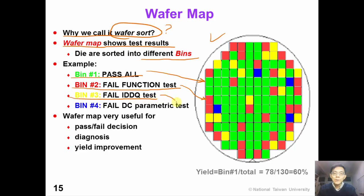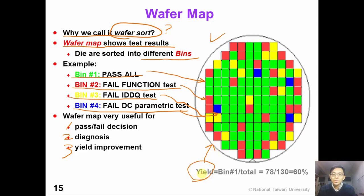The yellow color represents a die that passed the functional test but failed the IDDQ test. The blue square represents a die that failed the DC parametric test. This wafer map provides very useful information for pass-fail decisions, for diagnosis, and for yield improvement. For example, for this particular wafer, the yield can be defined as the number of bin-one dies over the total number of dies, which is 60%.